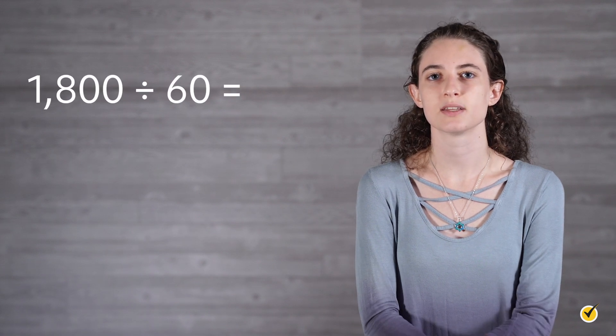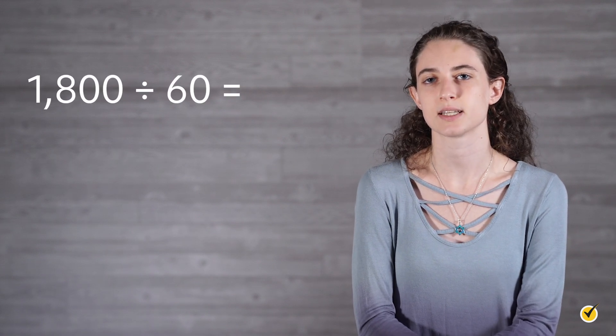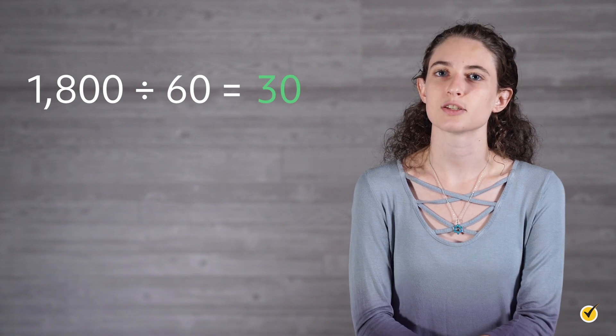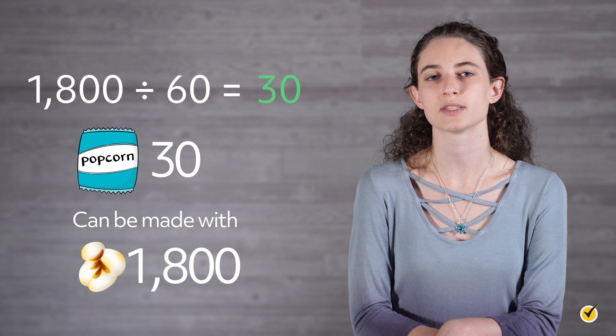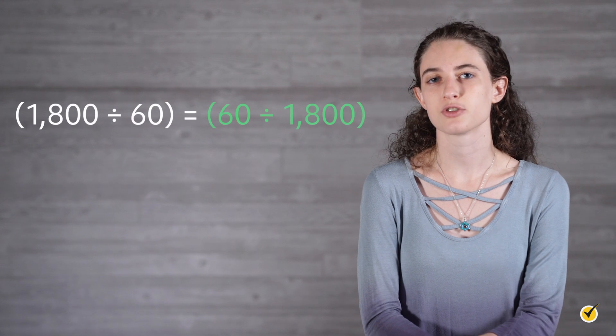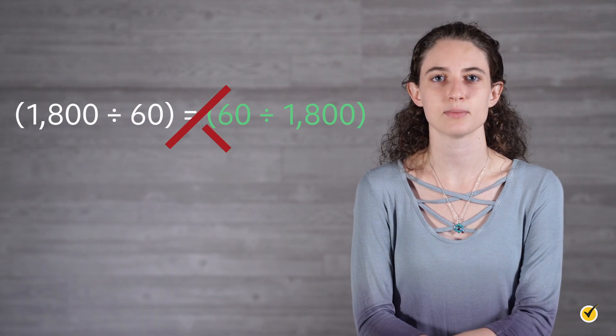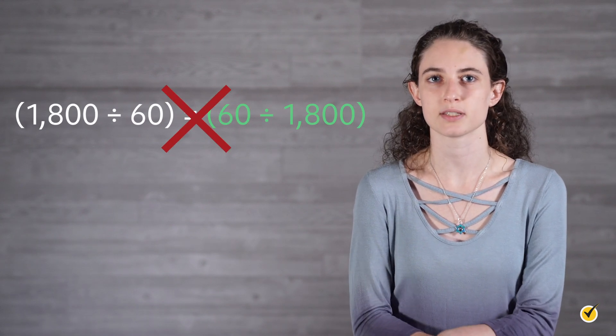1,800 divided into groups of 60 is represented as 1,800 divided by 60. In this case, the answer is 30, so 30 bags of popcorn can be made with our 1,800 kernels. As you can see, division is not commutative, because the order of the values plays a crucial role in determining the answer. 1,800 divided by 60 is not the same thing as 60 divided by 1,800.